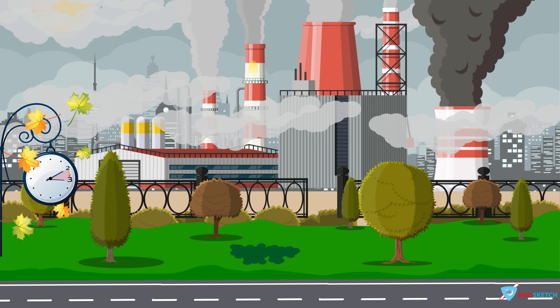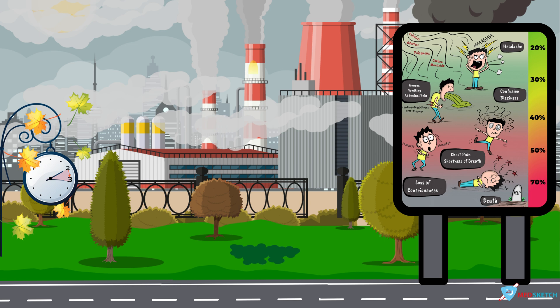Let's talk about the signs and symptoms. You can see a billboard on the right side of the scene. If you zoom the scene, you can see different percentages and different symptoms are present at different concentrations.